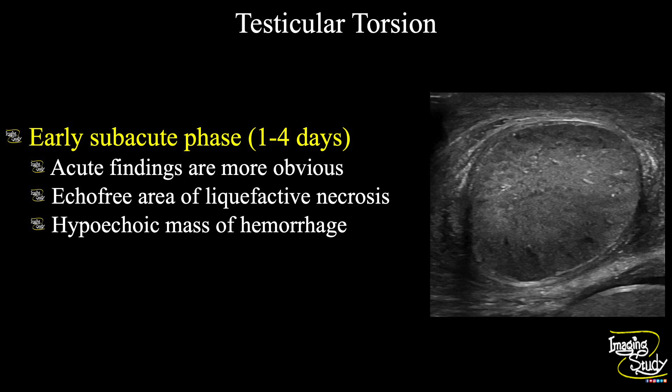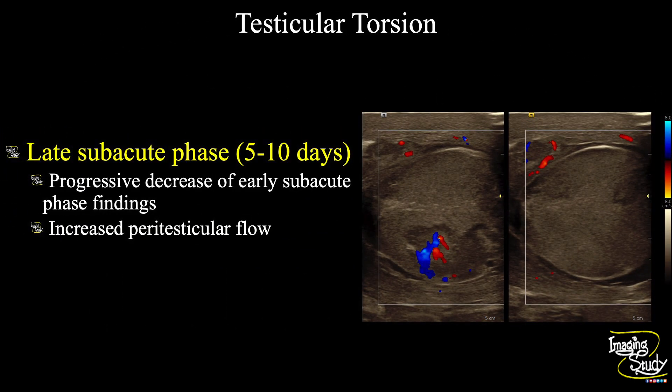If the patient comes within one to four days, this is the early sub-acute phase, where you will get features of necrosis — the acute findings will be more obvious, with multiple anechoic areas of liquefactive necrosis within the testicular parenchyma or hypoechoic areas of hemorrhage. The late sub-acute phase denotes a duration of five to ten days, where you get progressive decrease of early sub-acute findings and the peritesticular flow becomes increased, as found in today's case.